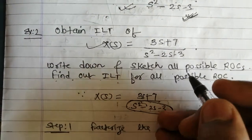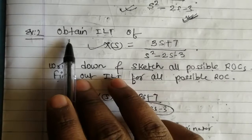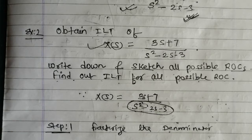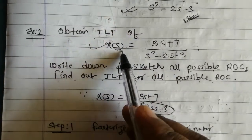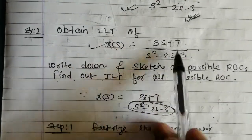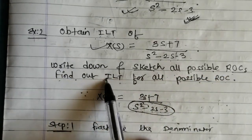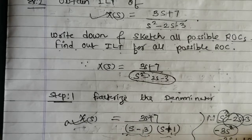Hi everyone. In this video we are continuing with our previous numerical on inverse Laplace transform. In our last video we couldn't complete the full solution, so in this particular video we are continuing with the next part. The question is to find the inverse Laplace transform of X(s) = (3s+7)/(s²-2s-3), writing and sketching all possible ROCs and finding the inverse Laplace transform for all possible ROCs.